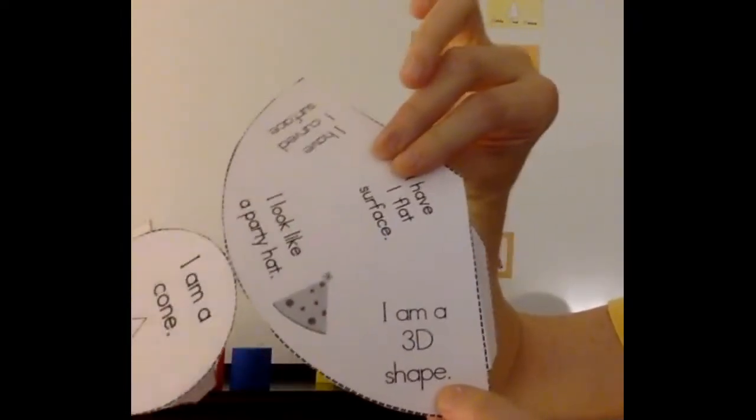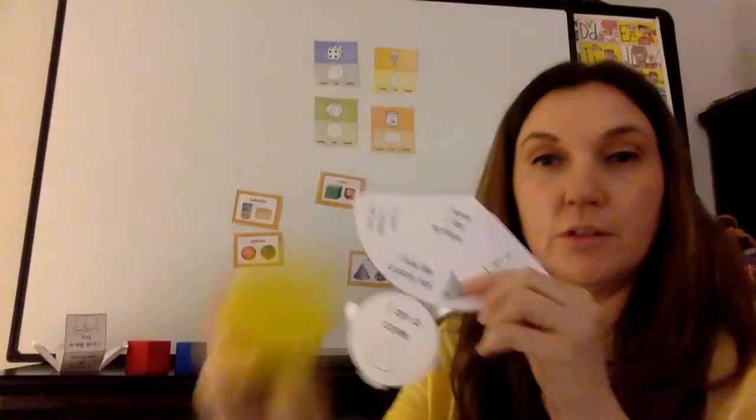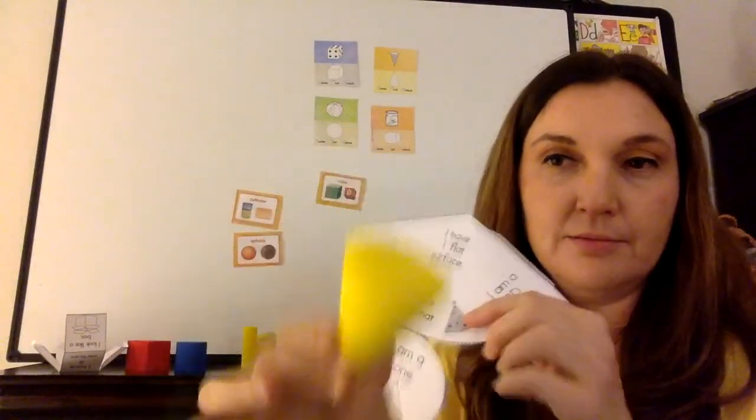I'm a 3D shape. I have one flat surface. In the cone, where's the flat surface at? It'll be here. One flat surface.